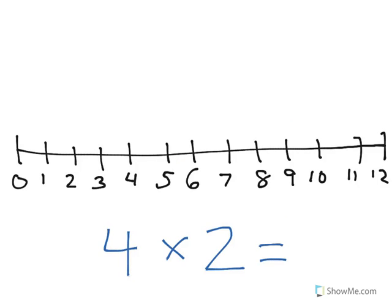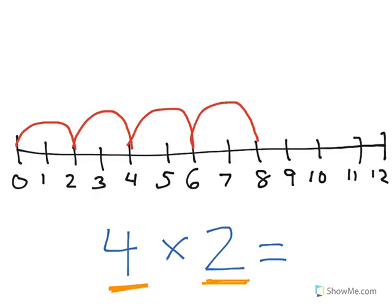Now, sometimes you might be given the multiplication problem and you're not sure how to solve it. You can use the number line to help you figure out what the product is. The product is the answer to a multiplication problem. Remember, the first factor is how many jumps or groups we're going to have. The second one tells us how many are in each jump. So in this particular problem, 4 times 2, we're going to jump 4 times and jump 2 each time. Here we go: 1, 2, 3, 4. Let's count: 1, 2 — 1, 2 — 1, 2 — 1, 2. We did 4 jumps. 4 times 2 is 8.